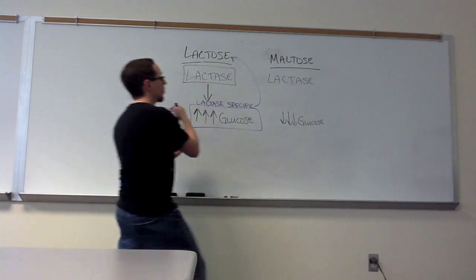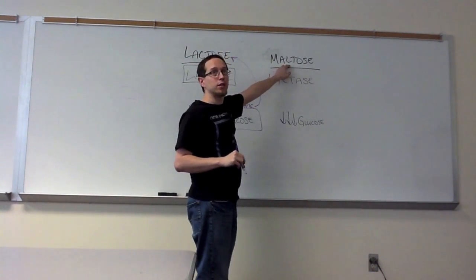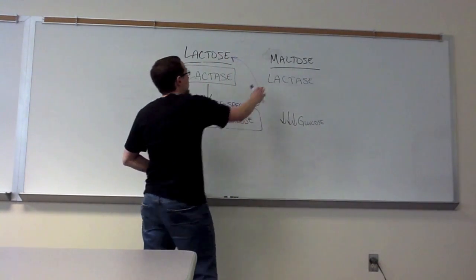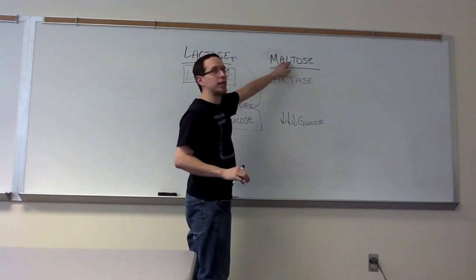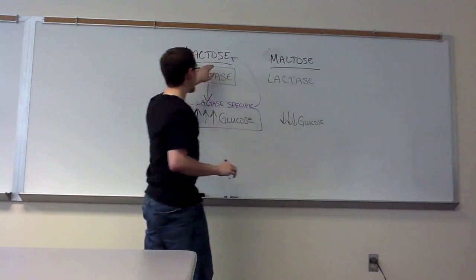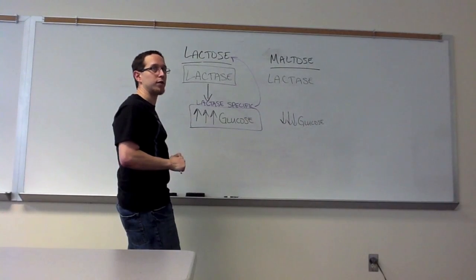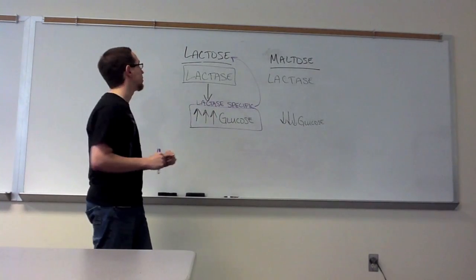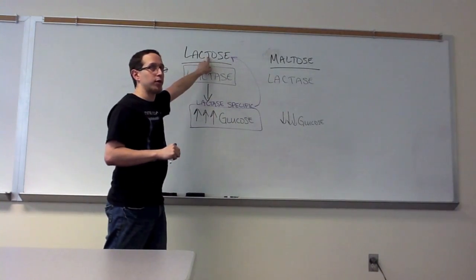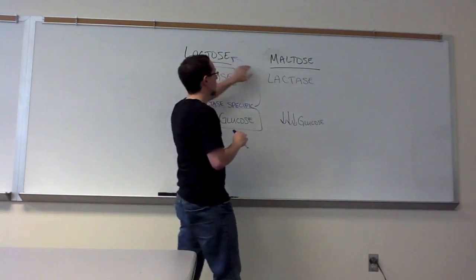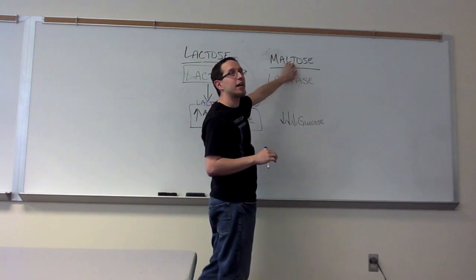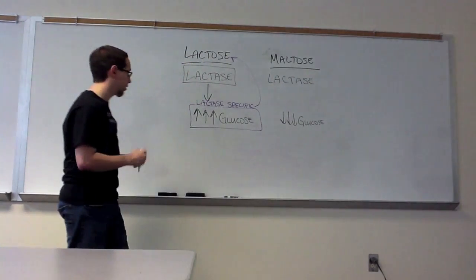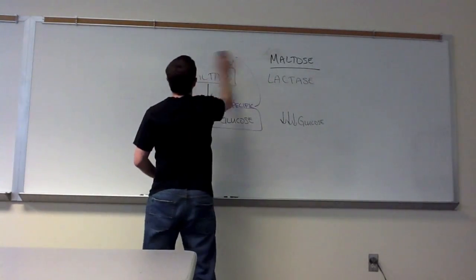Now, maltose has its own enzyme, maltase, and if we did the inverse of this exercise and put maltase in each of these tubes, then we might actually have seen that the maltose tube produced higher levels of glucose than the lactose tube did. So that's enzymatic specificity. How well or how specific our enzyme is for its substrate, how efficiently it binds to it, and how it recognizes that a molecule that looks very similar to its substrate is actually not its substrate.